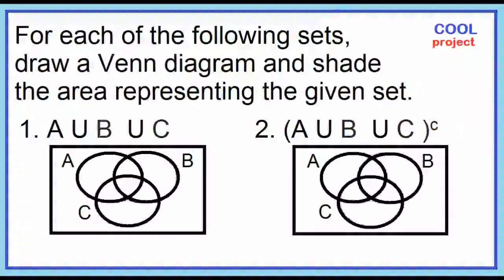Number one: A union B union C. Shade circles A, B, and C.